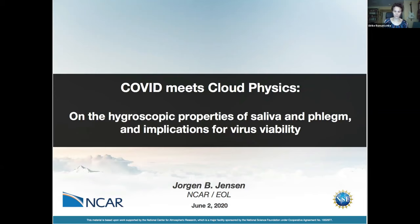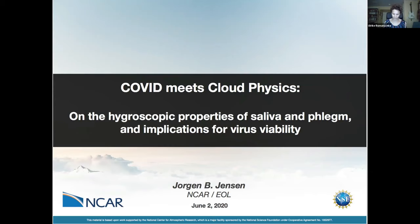Jan stayed at the University of Washington a couple more years for a postdoc, before he became a postdoc at NCAR at the Mesoscale and Microscale Meteorology Lab. He then moved on to Australia, where he became a scientist at the CSIRO Atmospheric Research in Melbourne. He stayed in Australia for about a decade before he came back to NCAR, to the Research Aviation Facility, where he has been a scientist ever since. He was and is the leader of the RAF's Scientific Project Management Group and also the leader of the Science and Instrumentation Group.